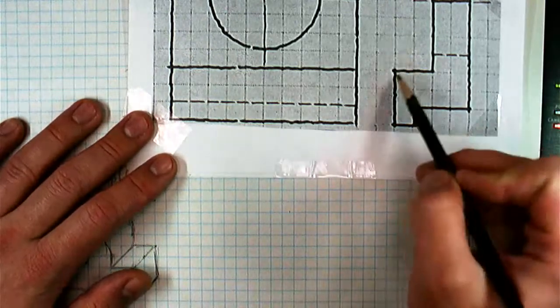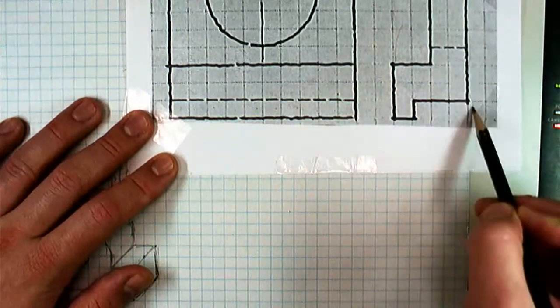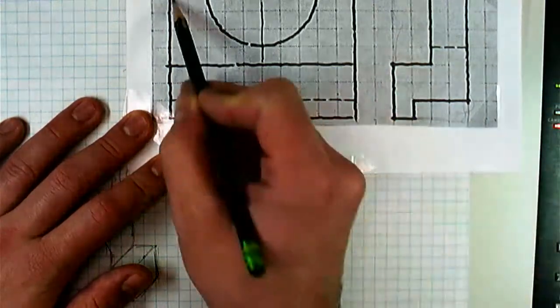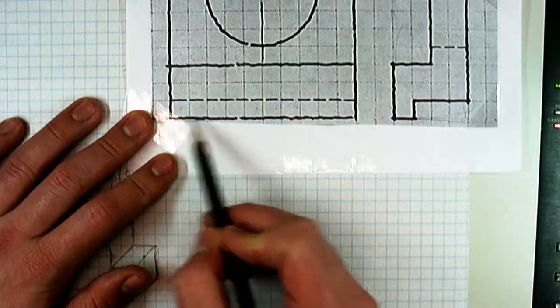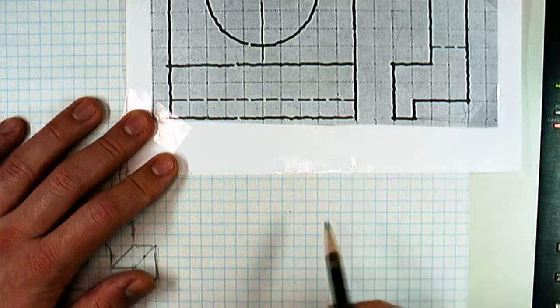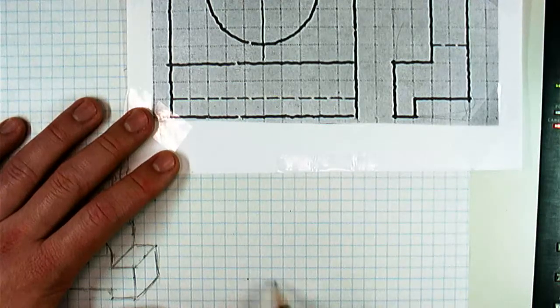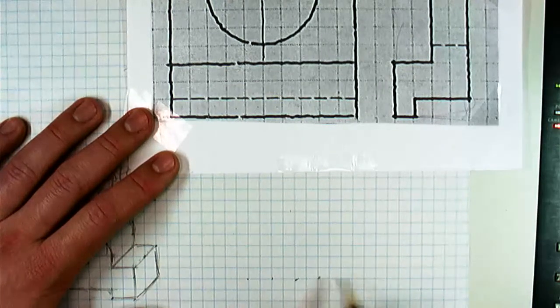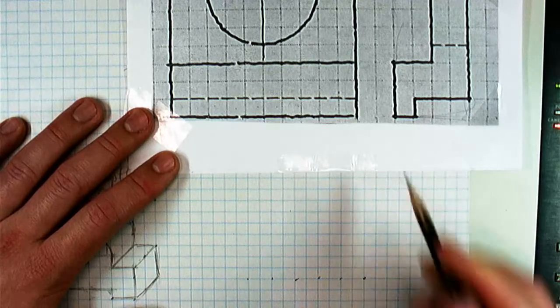For this one, same technique. I'm just going to block in all of the area that I think should be there. So the top part's easy. I pretty much already have it. This is 2, 4, 6, 8, 10 across. So let's put that on. 2, 4, 6, 8, 10 across. How tall? 2, 4, 6, 7. 2, 4, 6, 7.